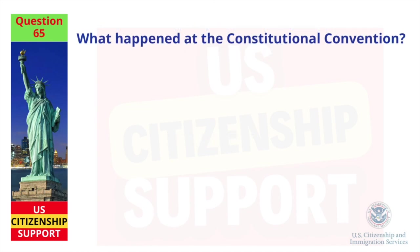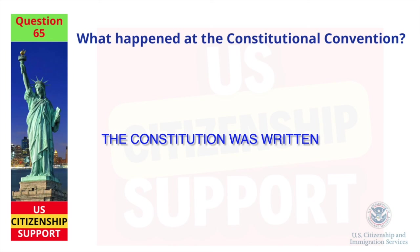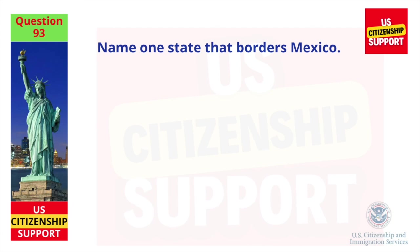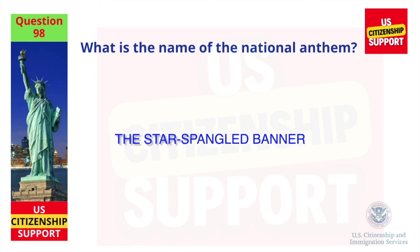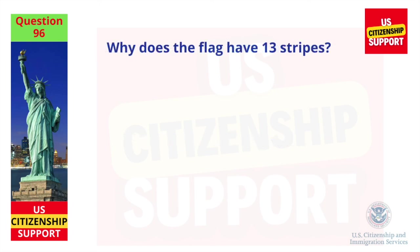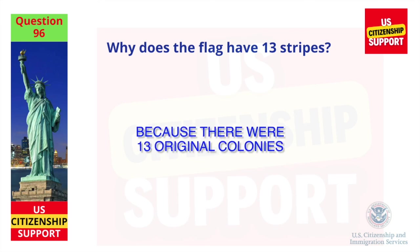What happened at the Constitutional Convention? The Constitution was written. Name one state that borders Mexico. California. What is the name of the national anthem? The Star-Spangled Banner. Why does the flag have 13 stripes? Because there were 13 original colonies.